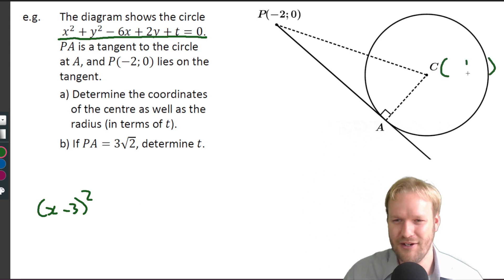So x minus three squared minus nine plus y squared. There was a plus t over here, plus t equals zero.